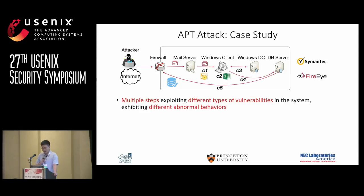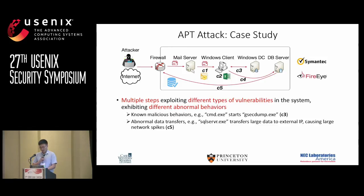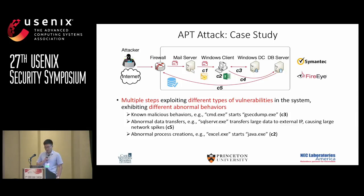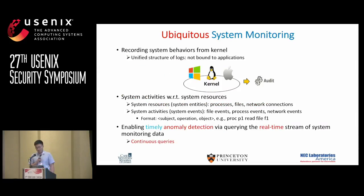As we can see, these APT attacks are very sophisticated. They involve multiple steps exploiting different types of vulnerabilities, which exhibit different abnormal system behaviors. For example, in step C3, the program GSECDOM.exe was started by command.exe, which may be known to some security analysts. There also exist abnormally large transfers on the database server, and abnormal process creations on the client — for example, Excel.exe starting Java.exe, which is obviously suspicious because Excel never starts Java. Since suspicious behaviors could happen on any host in the enterprise, ranging from employee stations to servers, we need solutions that can record all underlying behaviors of the system, leading to the idea of ubiquitous system monitoring.